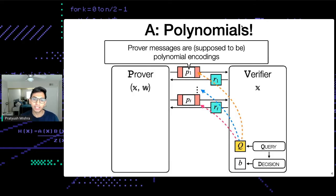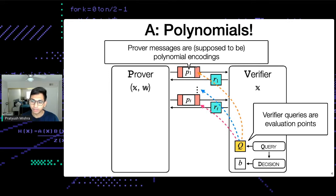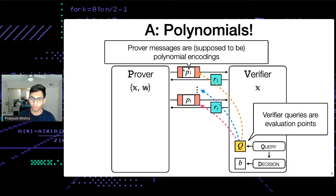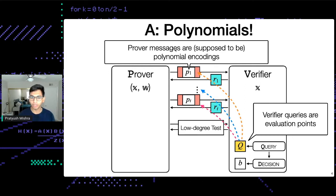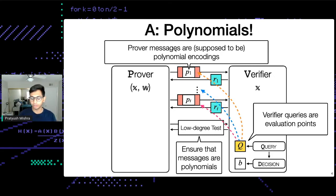Inside most common IOPs, such as Stark, Aurora, or basically anything you'd want to implement, the prover messages are supposed to be polynomial encodings, and the verifier queries are evaluation points. The verifier is asking: what is the evaluation of, say, P1 at a point Z1? And to enforce that messages are polynomials, most IOPs include a low-degree test, which ensures that the messages are actual polynomials of a specified degree.